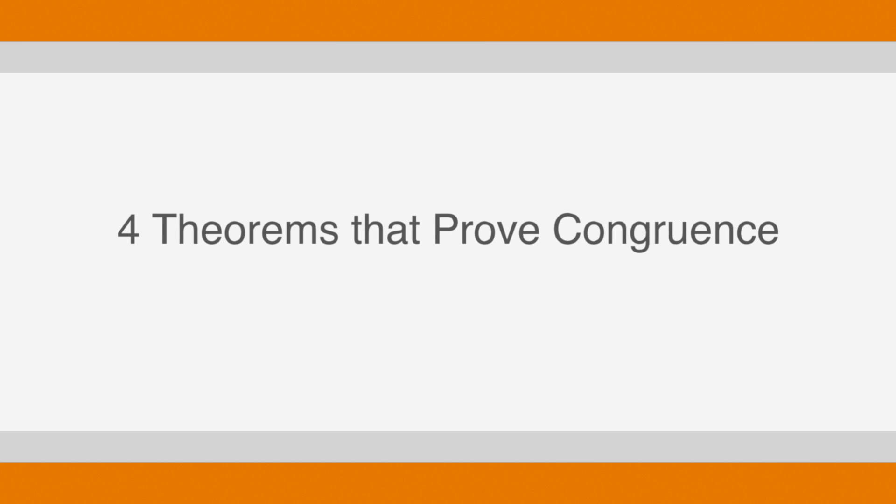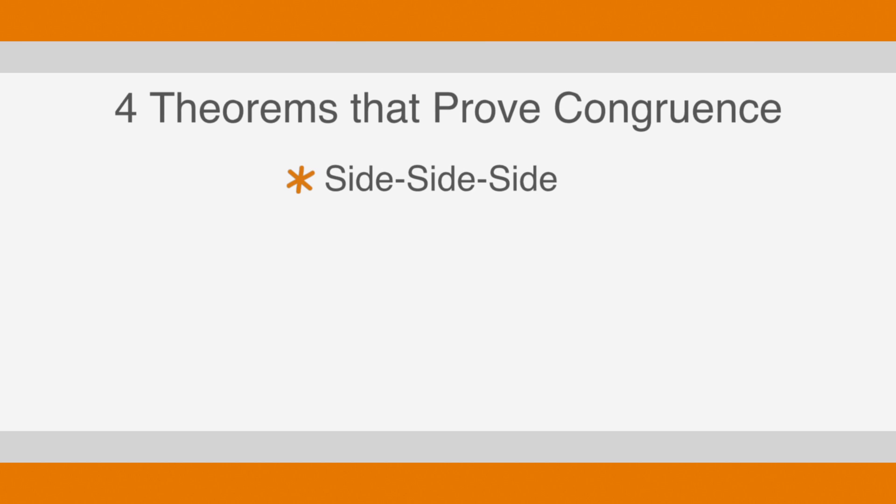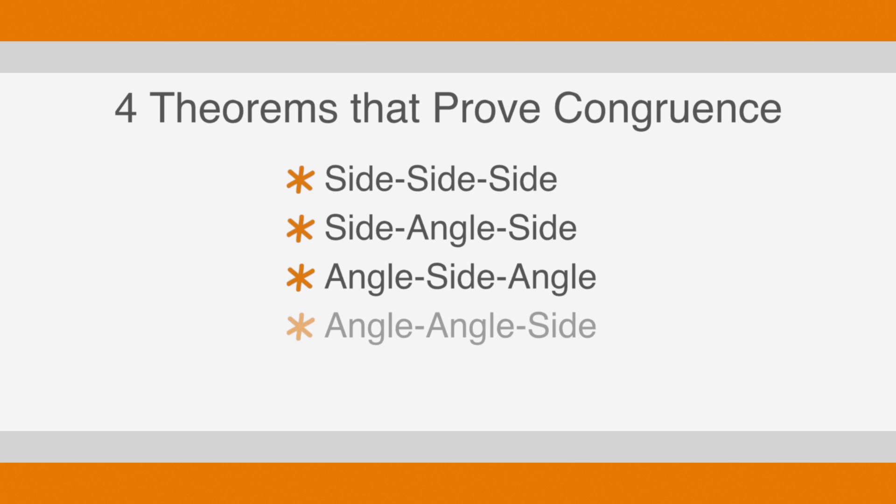There are four theorems that prove congruence: side side side, side angle side, angle side angle, and angle angle side. There's also a fifth theorem that only works for right triangles: hypotenuse leg. That was the name of my band in high school but that's a story for another time.